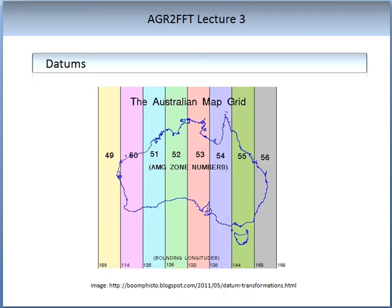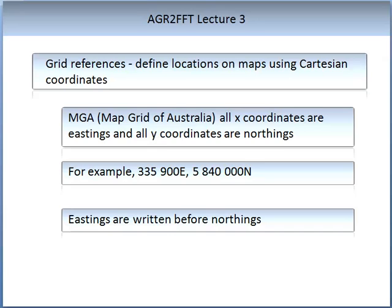The image on the slide shows the Australian map grid, which shows the different datums or AMG zone numbers used in the datum's construction. Grid references are used in GIS and define the location on maps using coordinates. For the map grid of Australia used in GIS, all X coordinates are eastings and all Y coordinates are northings. Eastings are always written before northings. An example of these coordinates might look something like 335900 east by 5840000 north, which relates to an exact location in Australia.